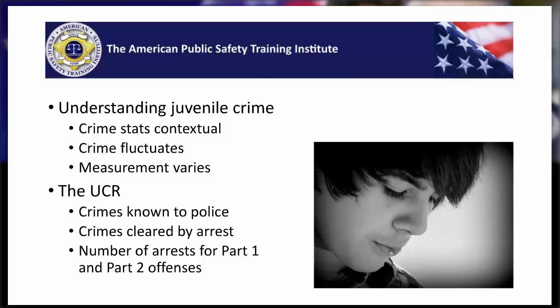Crimes cleared by arrest is the second UCR category. This data includes the number of offenses cleared by an arrest — but cleared by arrest does not necessarily indicate the number of people arrested. For example, the arrest of one person may clear multiple crimes: if a youth was involved in four burglaries and gets arrested, that clears the other three. Third, the UCR tracks persons arrested for Part 1 and Part 2 offenses, collected by age, race, gender, and location.